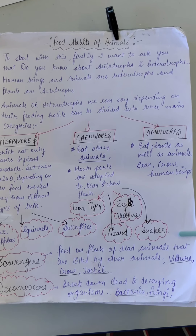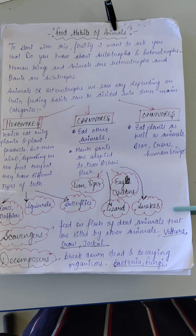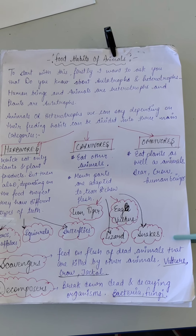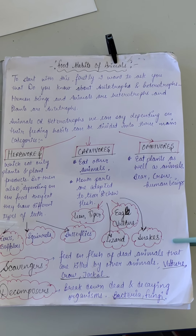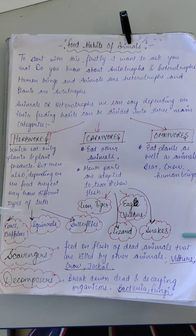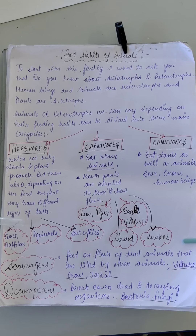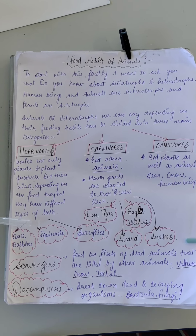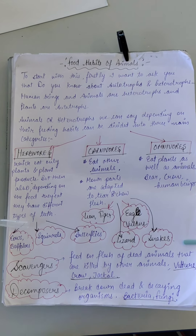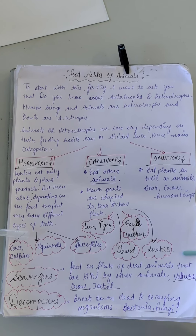A very warm good morning to all my students. We are doing our chapter Food and its Resources, and this is the second lecture. In our last lecture, we covered the concepts of what is food, what is the function of food, what are the ingredients of food, and what are the various sources of food — different types of food from different plants and animals. Now the next topic we are going to do is Food Habits of Animals.